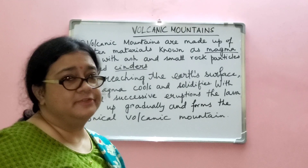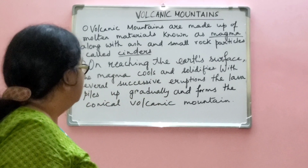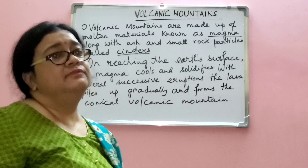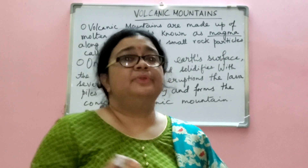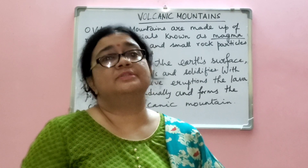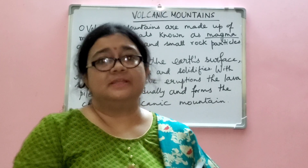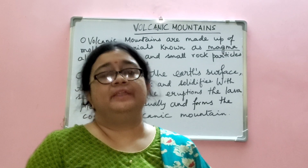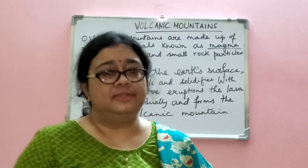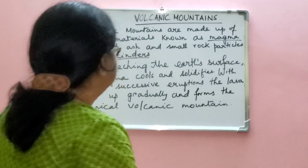On reaching the earth's surface, the magma cools and solidifies. With several successive eruptions, the lava piles up gradually and forms the conical volcanic mountain. Volcanic mountains are known as mountains of accumulation because they are formed as a result of accumulation of rock debris coming out after volcanic eruptions. When magma reaches the earth's surface and comes in contact with the atmosphere, it cools and solidifies to form lava.